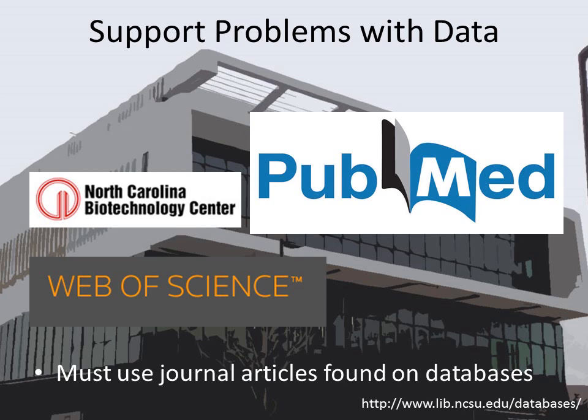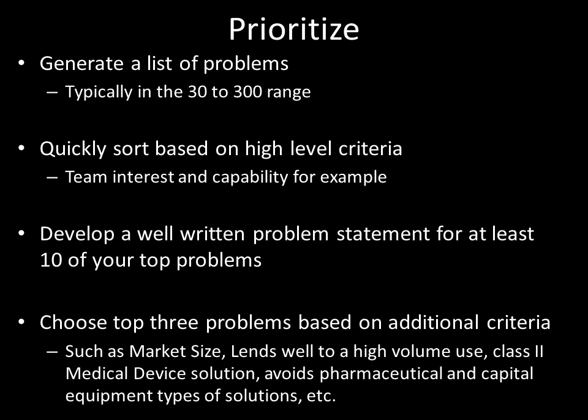It is not unusual for teams to come back from the observation and problem phase with a list of 200 problems. This is the easy part. The hard part is filtering out the good ones and developing a need statement for similar problems. Here are some examples from a team I worked with in the cardiothoracic space. I like the way that the observations and problems are visualized in these examples, and I think they will help you understand the relationship between observations and problems.